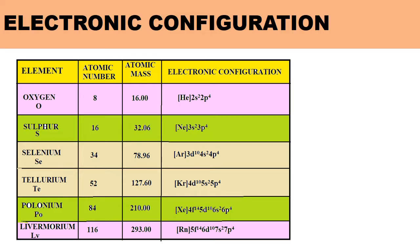Electronic configuration. We know the members of the Oxygen Family. The first member is Oxygen, then Sulphur, Selenium, Tellurium, Polonium, and Livermoreum. The atomic number of Oxygen is 8, mass number is 16, and the electronic configuration is [He] 2S2 2P4.